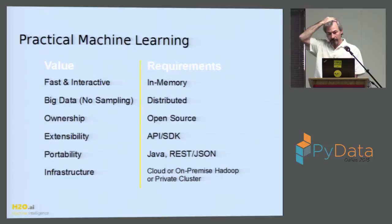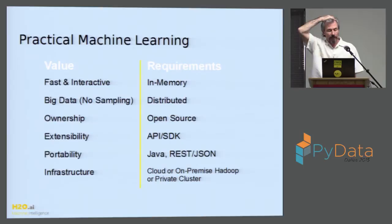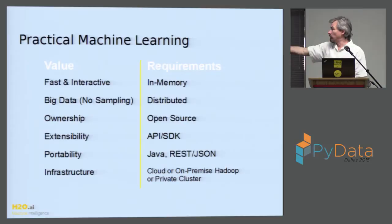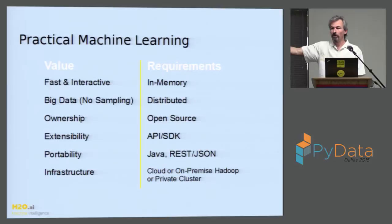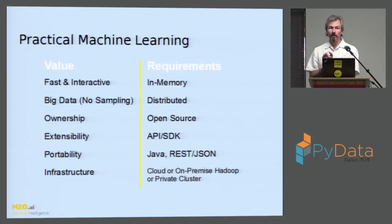We're building a practical machine learning tool. Practical means different things to different people. Fast and interactive means in-memory — we're memory speed, not disk speed. Order of magnitude is seconds to low minutes to build models on hundreds of gigabytes to a terabyte. The reason for big data is you don't have to go through the pain of so much sampling — you can use everything you've got if your cluster is big enough.